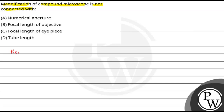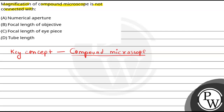If we talk about the key concept, that will be the compound microscope. We will learn about the compound microscope. Basically, if we talk about a compound microscope, we can say that it is used to magnify images.